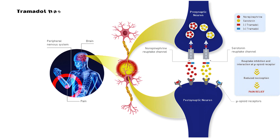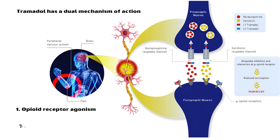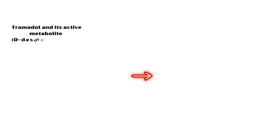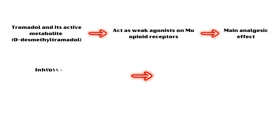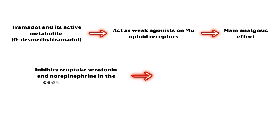Tramadol has a dual mechanism of action: opioid receptor agonism and inhibition of monoamine reuptake. Tramadol and its active metabolite O-desmethyltramadol act as weak agonists of the mu-opioid receptor, exerting its main analgesic effect. Additionally, it inhibits the reuptake of serotonin and norepinephrine in the central nervous system, enhancing the descending inhibitory pathway.